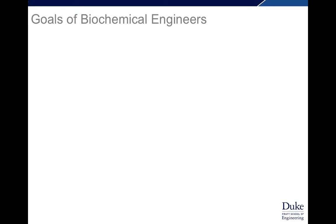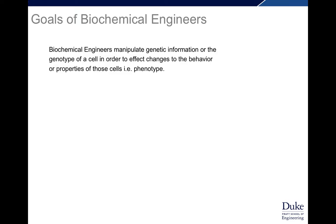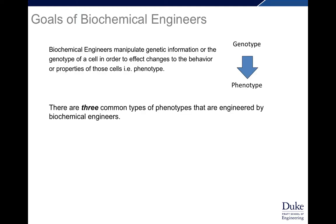To start with, the goals of biochemical engineers are really to manipulate genetic information — the genotype of a cell — in order to affect changes to the behavior or properties of those cells, i.e. the phenotype. So we're manipulating genotype to affect the phenotype. There are three common types of phenotypes that are engineered by biochemical engineers.